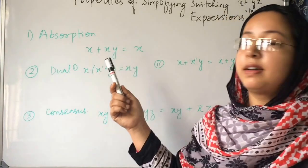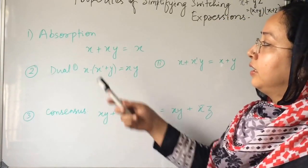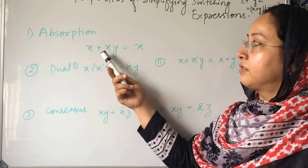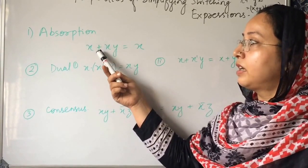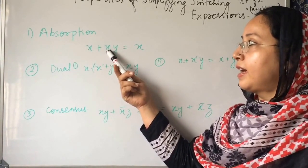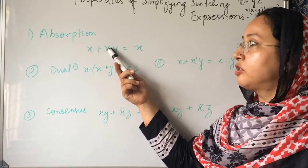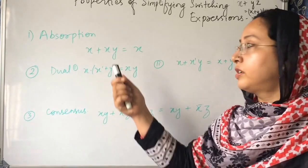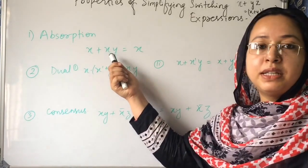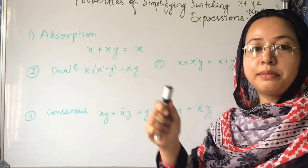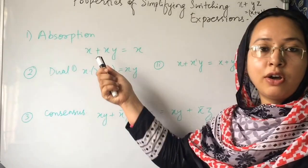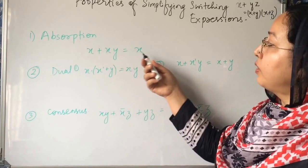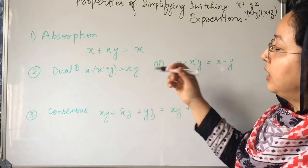x plus xy is equal to x. What it is? x plus xy. Plus means OR and xy means x dot y. I am not writing dot here but it means it is dot. Dot means AND and plus means OR. So, how is it true? Let us see.